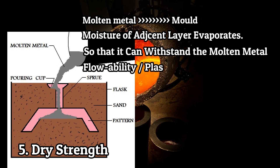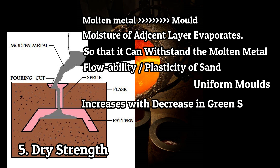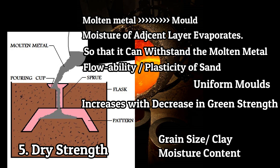Flowability and plasticity is the ability of sand which allows it to flow like a fluid into the mold. This property of sand is required to make a uniform mold. It allows sand particles to flow all over the mold during the ramming process. It increases with decreasing green strength, and also depends on grain size, clay, and moisture content.